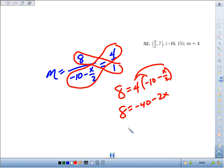I'd add 40 to both sides to get 48 equals negative 2x. Dividing by negative 2, I find that x equals negative 24.